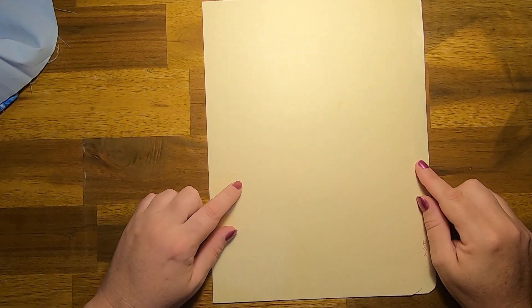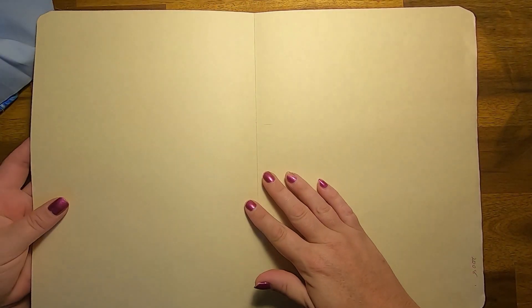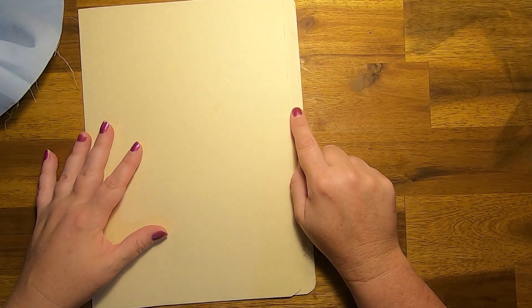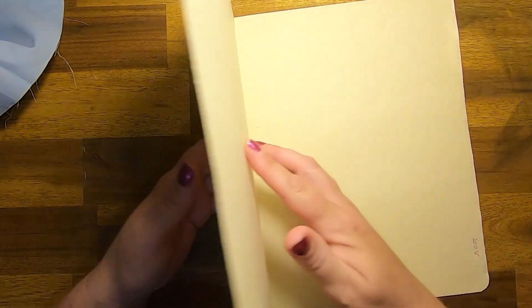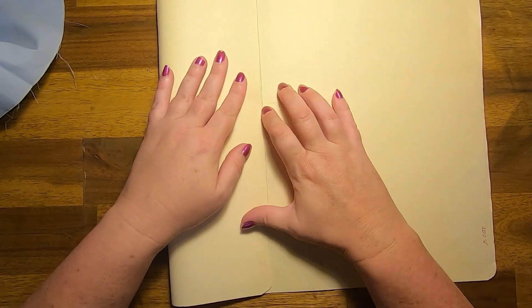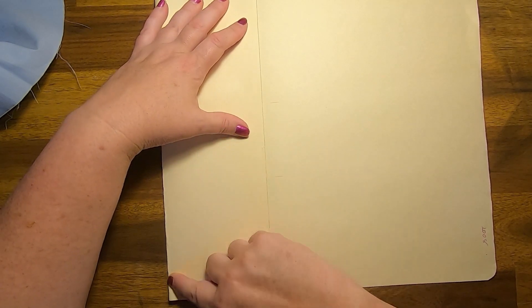So what I used is file folder, just some recycled file folder. So I'll show you how to do the folds. We open it out and the short side, see how one side is shorter than the other. So we just use the short side and we fold it into the center fold like that and give it a crease.